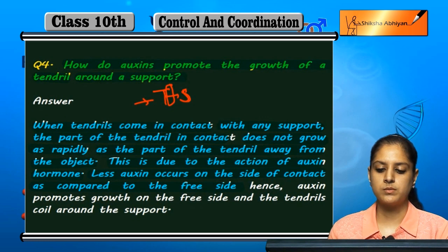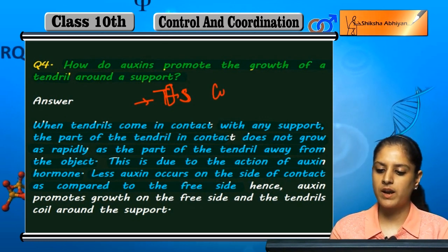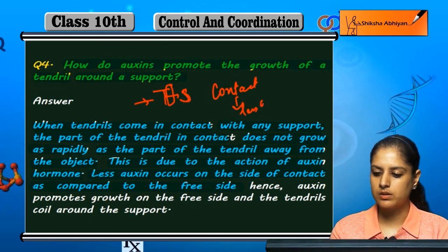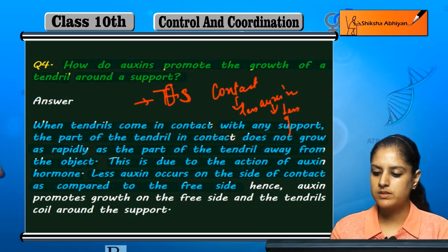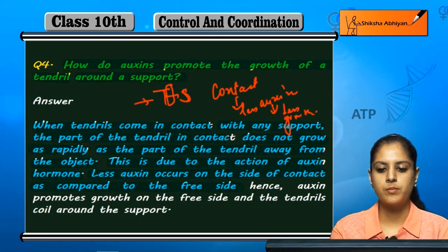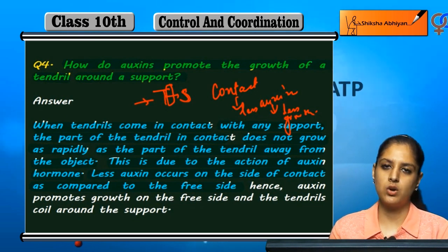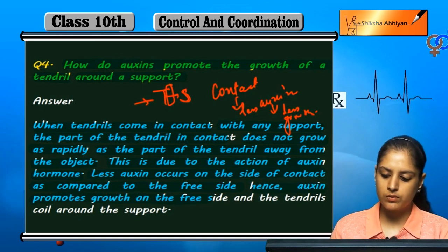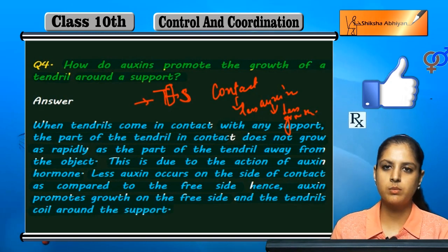Less auxin occurs on the contact side as compared to the free side. Jitna zyada auxin hoga utni zyada growth. So contact wali side par less auxin hota hai, less growth. Free side par zyada auxin hota hai, so woh zyada jaldi grow karte hai. Hence auxin promotes growth of the free side and the tendrils coil around the support.